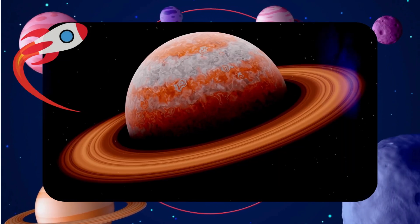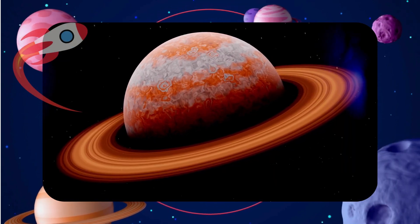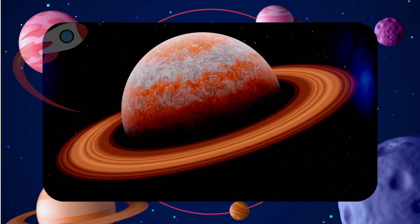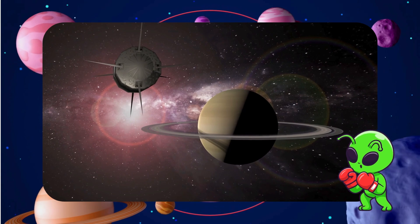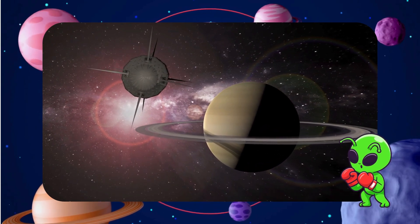The next is Saturn. Saturn is famous for its rings. They're made of ice and rocks and go all the way around the planet.